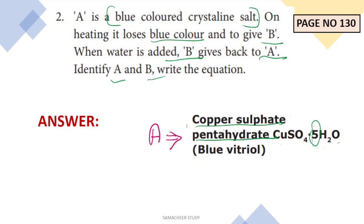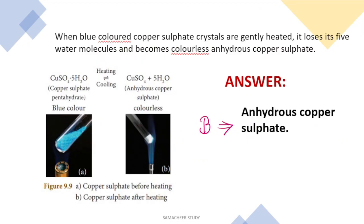When the blue colored Copper Sulphate Pentahydrate is heated, the water content is lost. The loss of water upon heating causes it to become colorless Anhydrous Copper Sulphate.